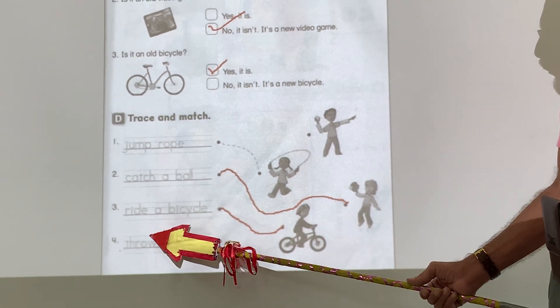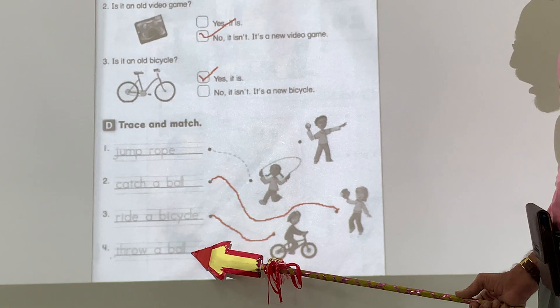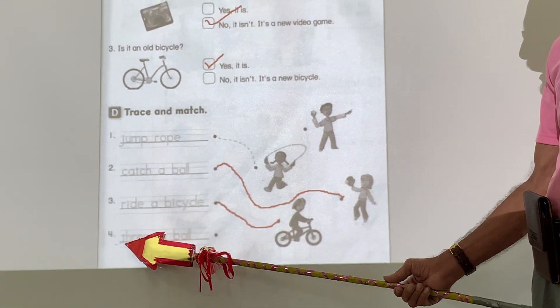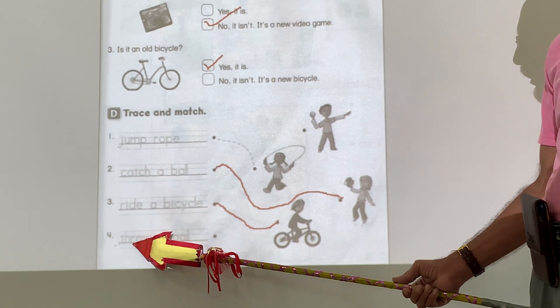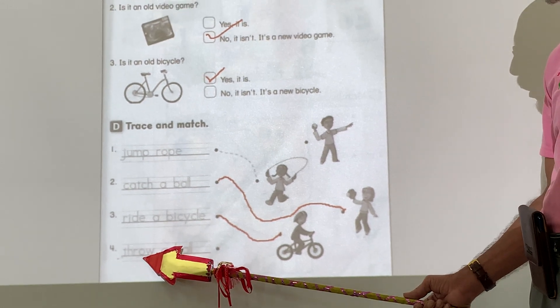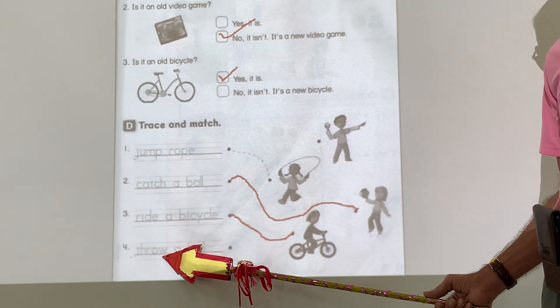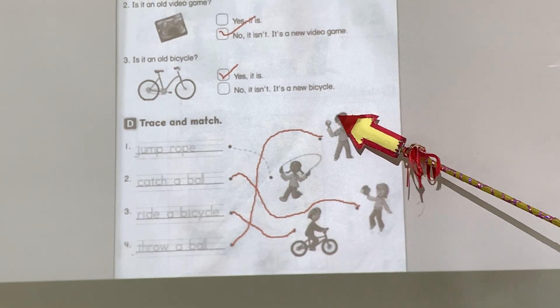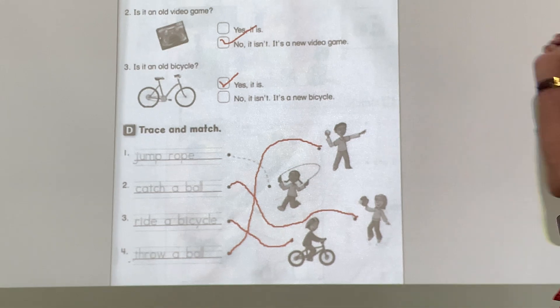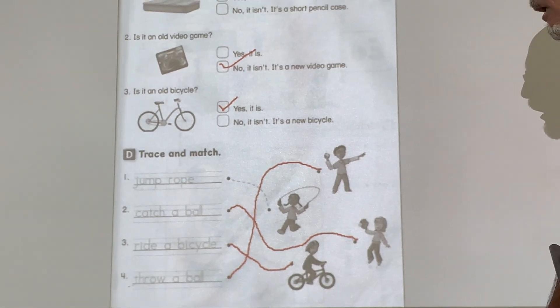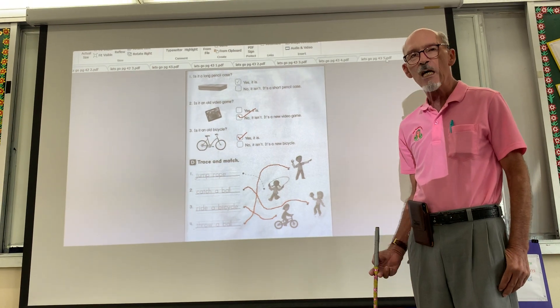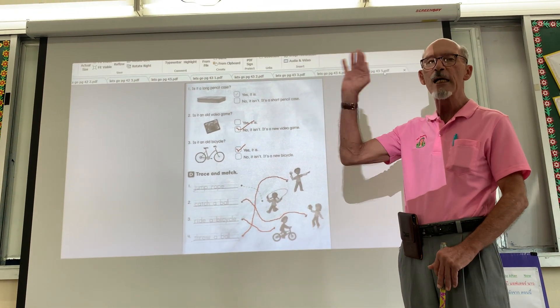And number four. Throw a ball. Throw a ball. T-H-R-O-W. Throw a ball. Obviously, this guy's throwing the ball. Okay? All right, guys. That's our Let's Go lesson for today. And I hope to see you soon. Bye-bye. Bye.